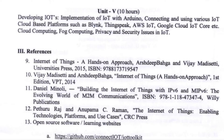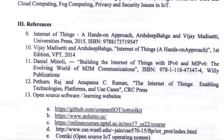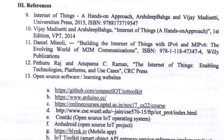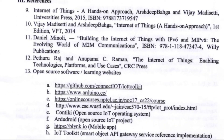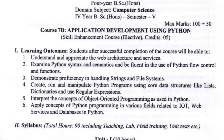Below, reference books are provided — please check those. Next, the 7B syllabus: the paper title is Application Development Using Python.